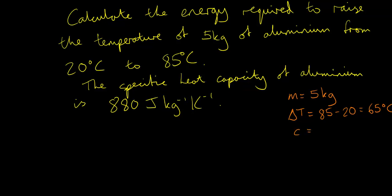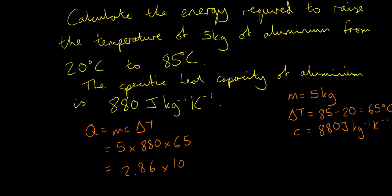And we know that C for aluminium is 880 joules per kilogram per Kelvin. So now we can use the equation Q equals MC delta T, substituting our values in. So 5 multiplied by 880 multiplied by 65 gives us an energy value of 2.86 times 10 to the power of 5 joules, which is also written as 286 kilojoules.